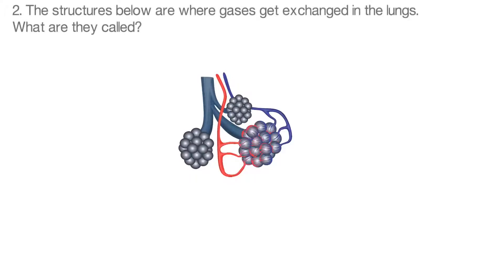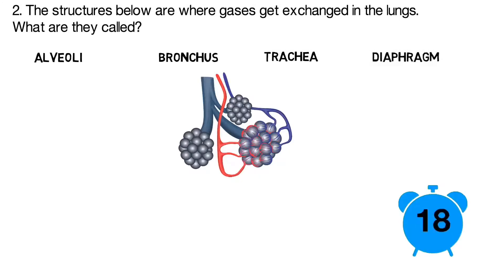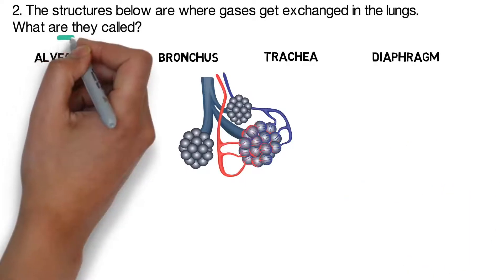Question number two: the structures below are where gases get exchanged in the lungs. What are they called? Are they the alveoli, are they the bronchus, are they the trachea, or is it the diaphragm? The answer is the alveoli.